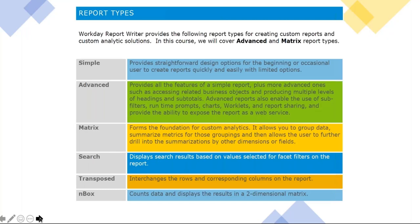Now let's look at the different kinds of reports Workday has to offer. The entire next few weeks will be focused on these. First, simple report: a straightforward report used when all the fields you need are on the primary business object — you don't need to pull fields from related business objects or use lookup related values. But the moment fields need to come from related business objects, you go with an advanced report. Advanced reports are used when presenting data as rows and columns, showing detailed data row by row.